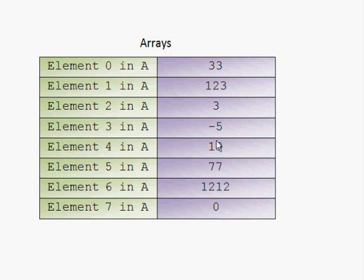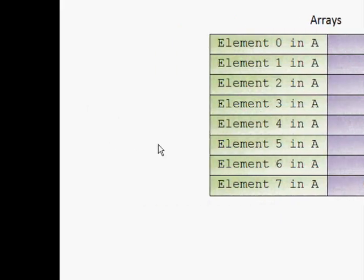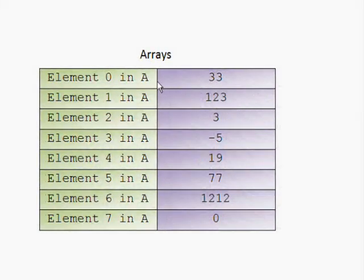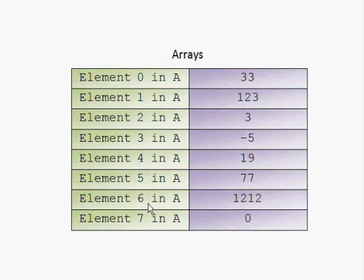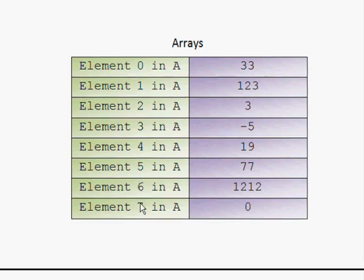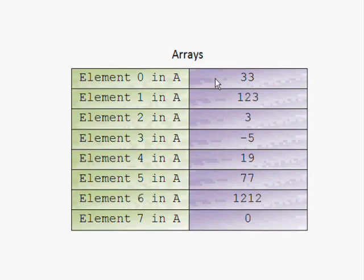So right now what we are seeing is an array — let's call it A. The green part is used to show you the position of the variable, and usually the numbering starts from zero in VB.NET. So element 0, element 1, and so on. Each one of those variables can store a value like normal ones.